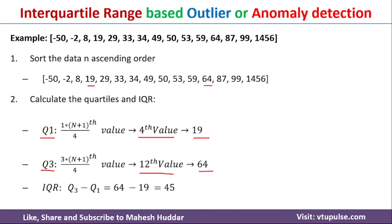Once you calculate Q1 and Q3, next we need to calculate the IQR. IQR is Q3 minus Q1. In this case, 64 minus 19 equals 45. So the interquartile range is 45.